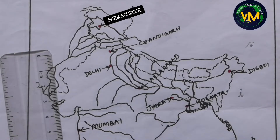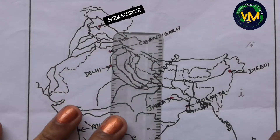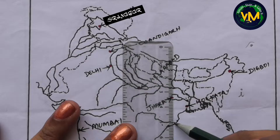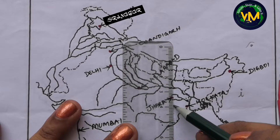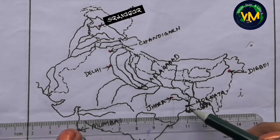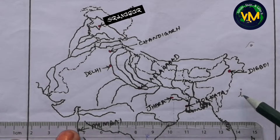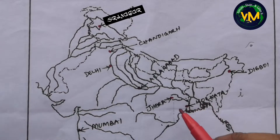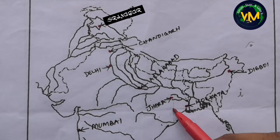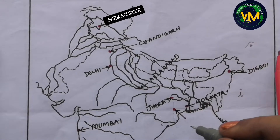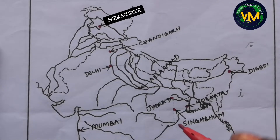Then we have an iron ore field — Singhbhum. To draw Singhbhum, take a scale from the mouth of River Mahanadi and draw a straight line. From the 'eye' of Kolkata — that cursive writing 'I' I mentioned — draw a straight line. The place where these two lines meet, the intersection, this is Singhbhum. This is an iron ore field.